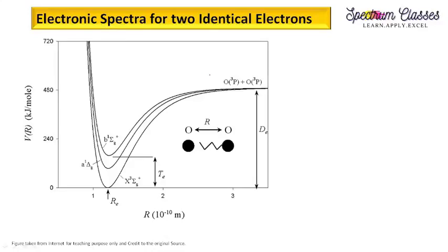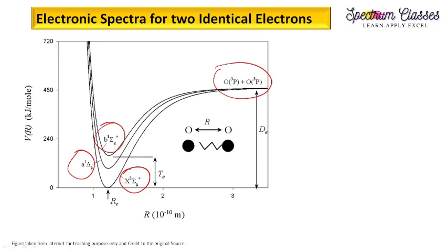Hello everyone, welcome back to Spectrum Classes. Here you are going to see the electronic spectra for two identical electrons, and you are going to see several terms which are written here. These are necessary to know to define the electronic spectra for a given molecule.